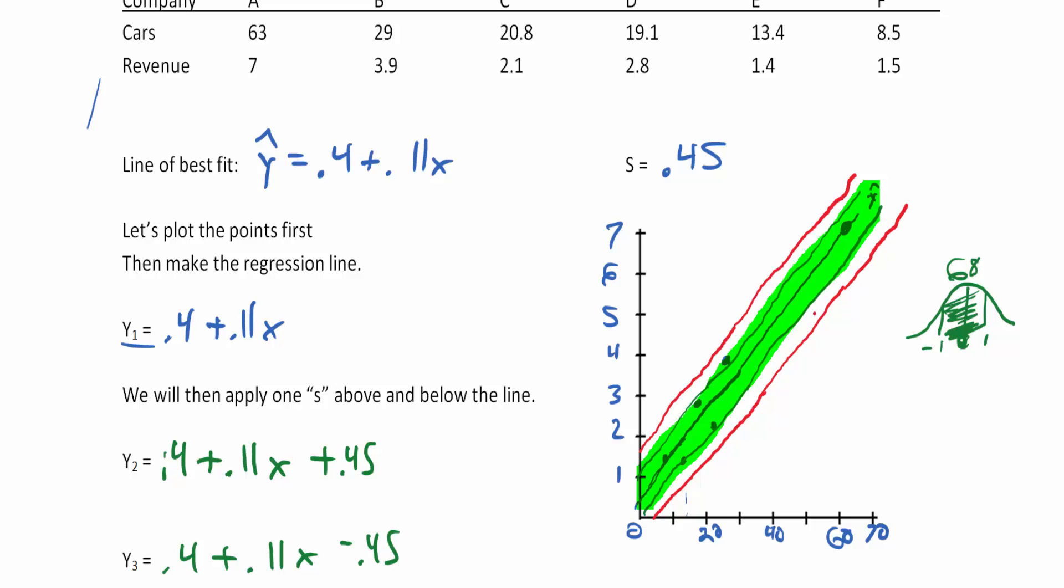By changing the y-intercept, you create a parallel line because you're not changing the slope. Parallel lines have the same slopes and different y-intercepts.